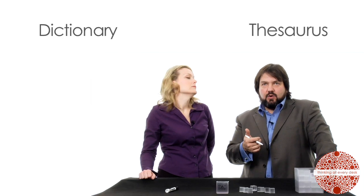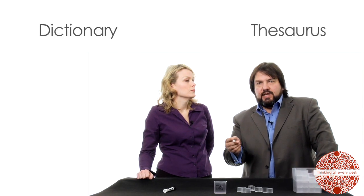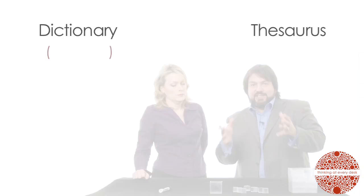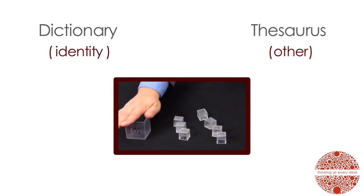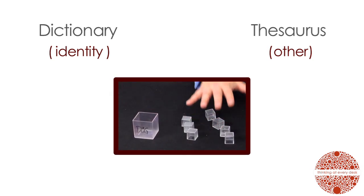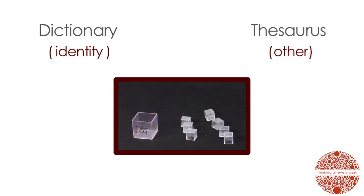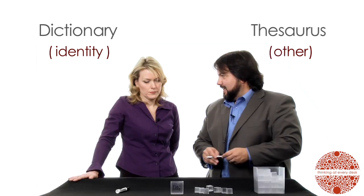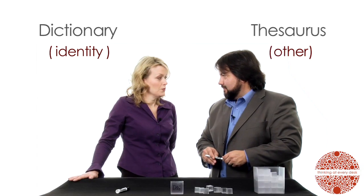Our two primary tools for language — the dictionary and the thesaurus — are really getting at distinctions: identity and other. The dictionary gives you identity, the thesaurus gives you other. Isn't that interesting? You could put the word 'scientist' on a block and ask what a scientist is — kids would say biologist, chemist, engineer — and then as they go further out, they might say things like couch, banana, bumblebee, going from what's familiar and similar to things totally different.